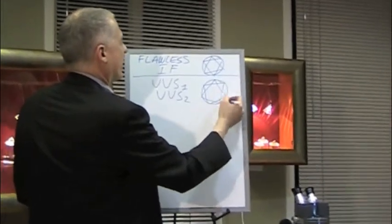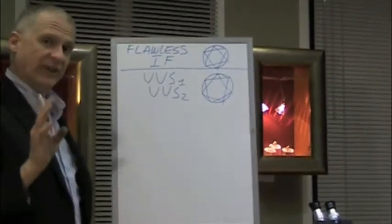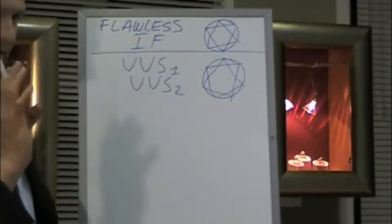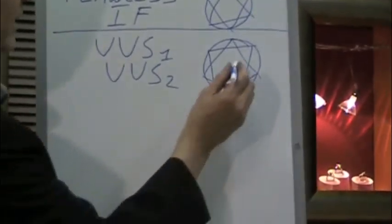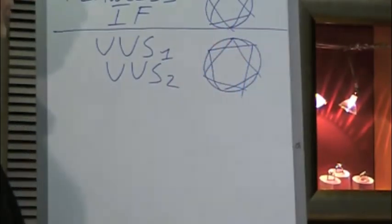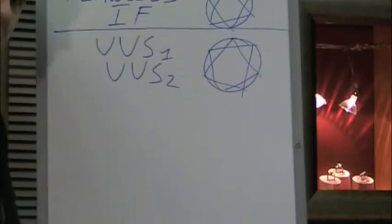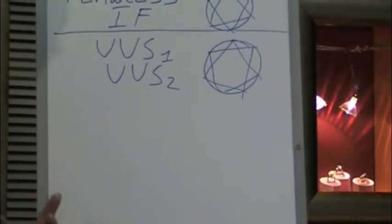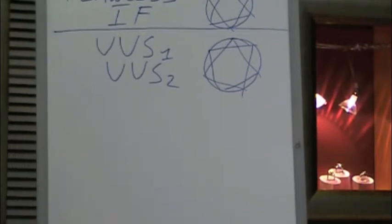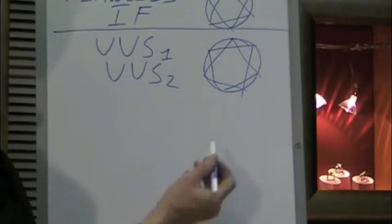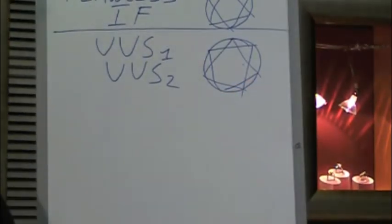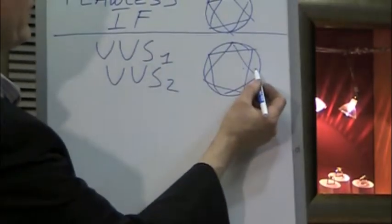Now a VVS1 basically, once again under high magnification with a trained eye, there'll be just a single little dot. Almost impossible to see, and it may sometimes take a trained appraiser 15 minutes or half an hour to find it. It's that difficult. A VVS2 might have two of these little dots or there'll be one slightly bigger dot.